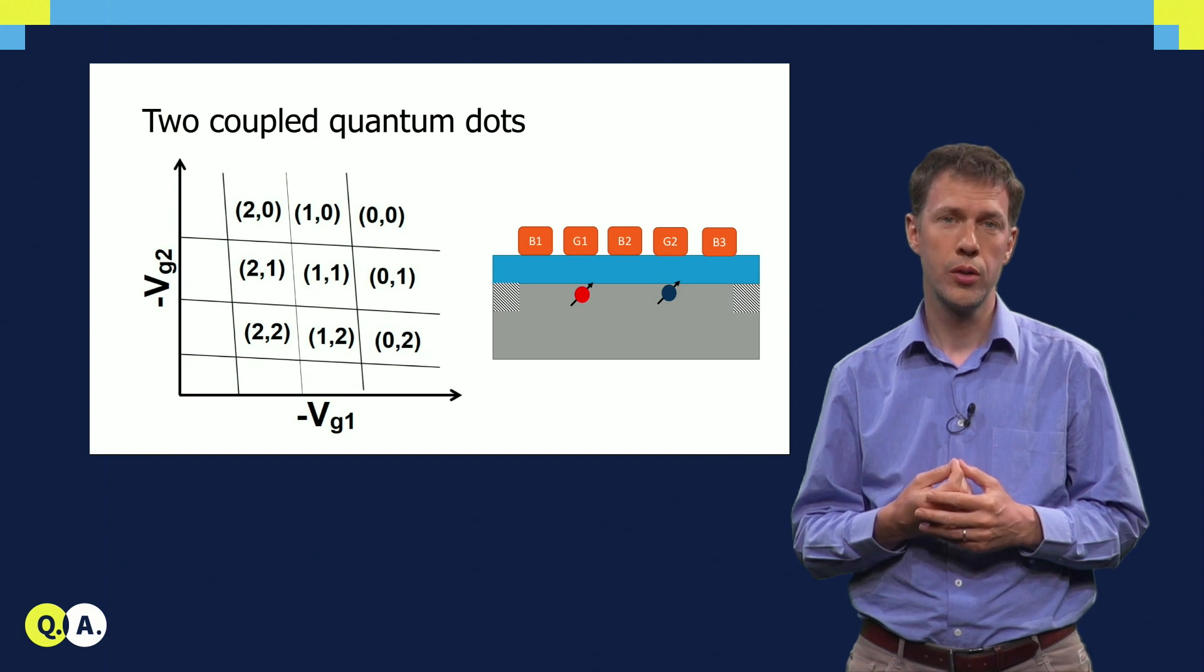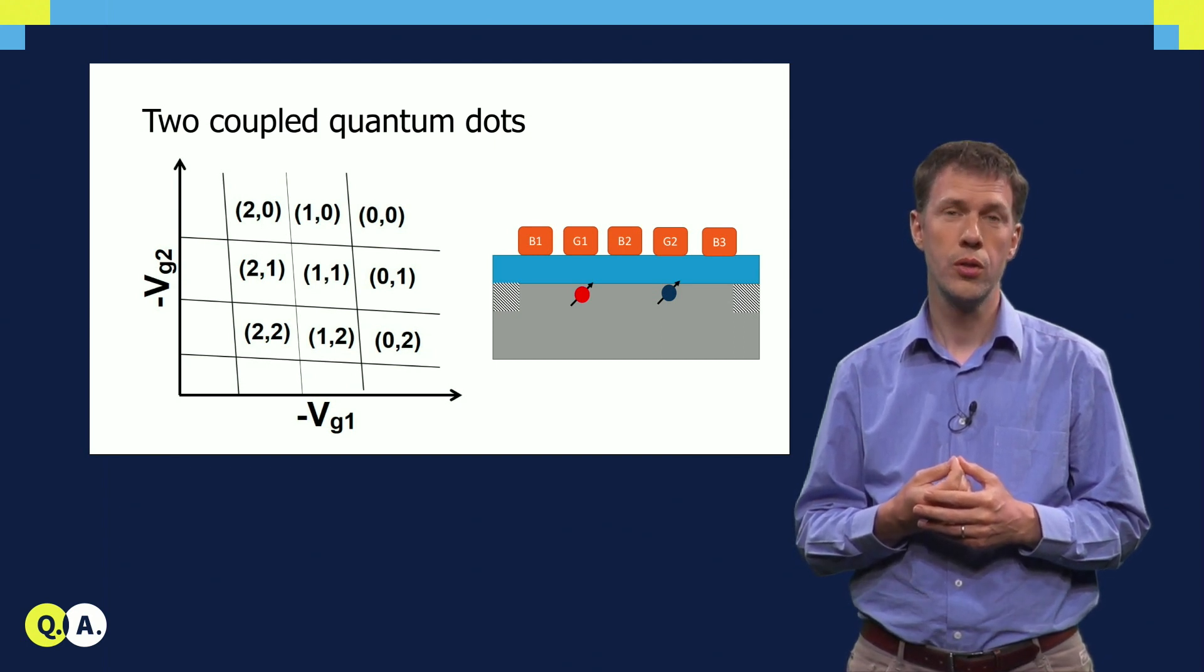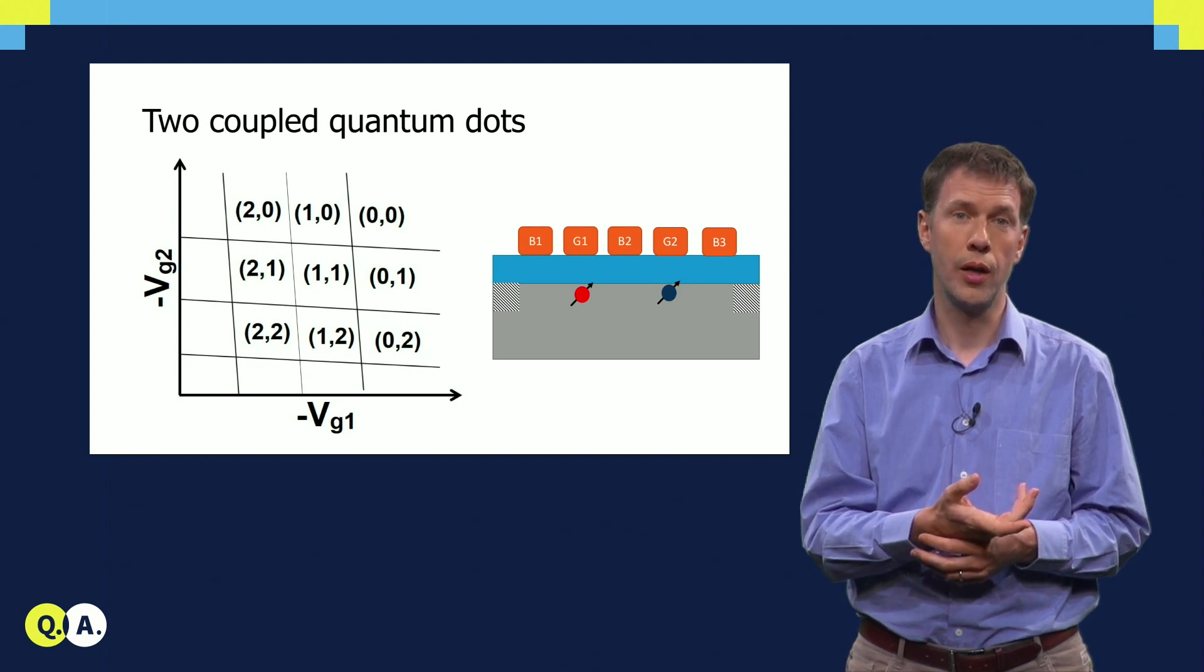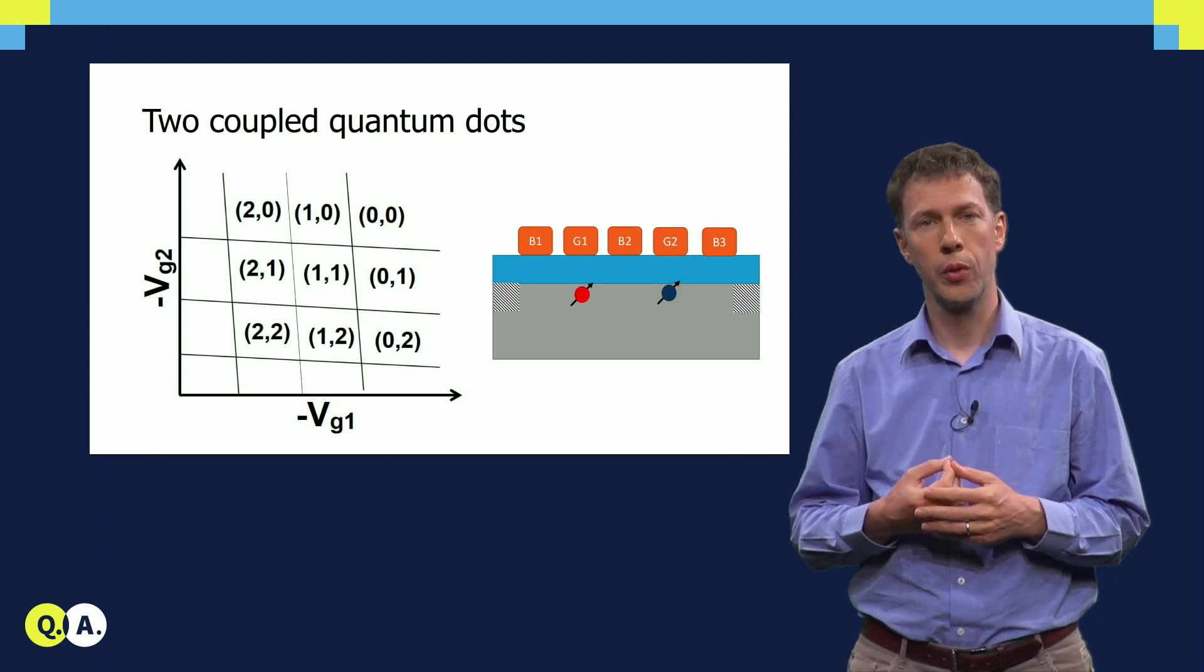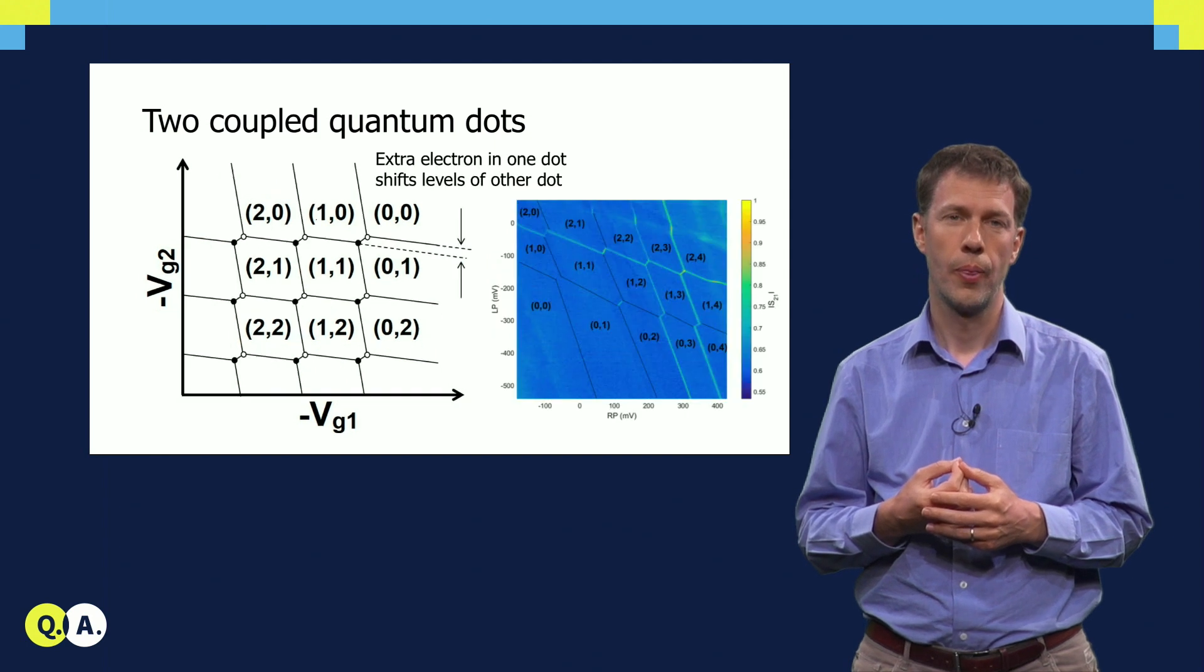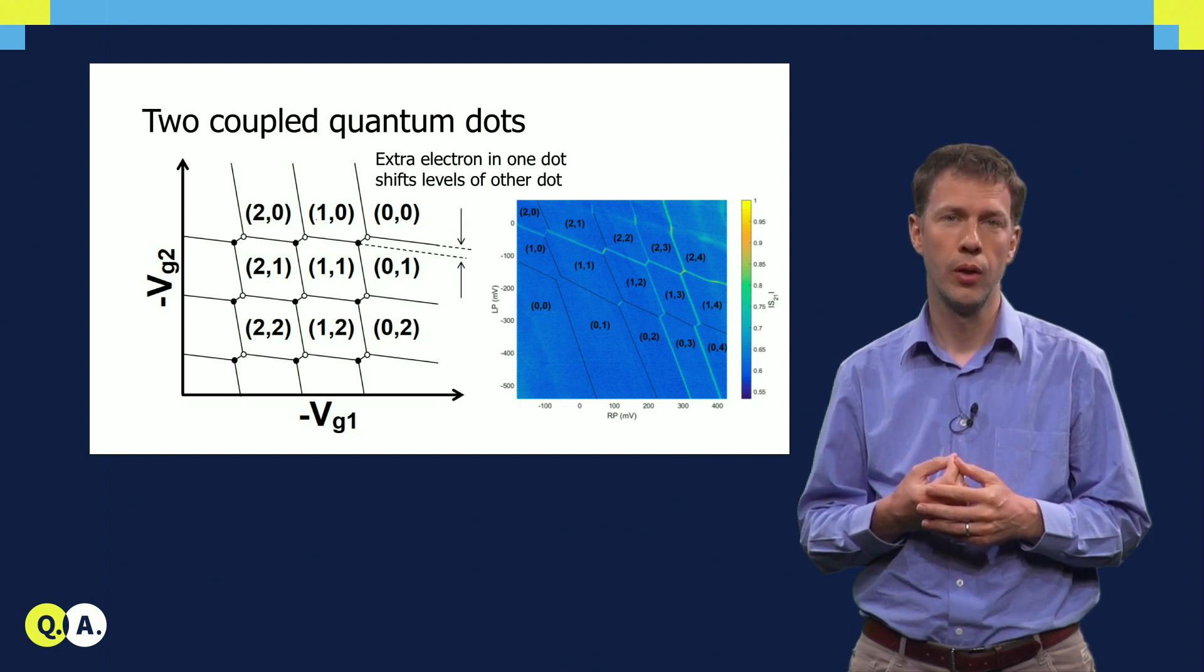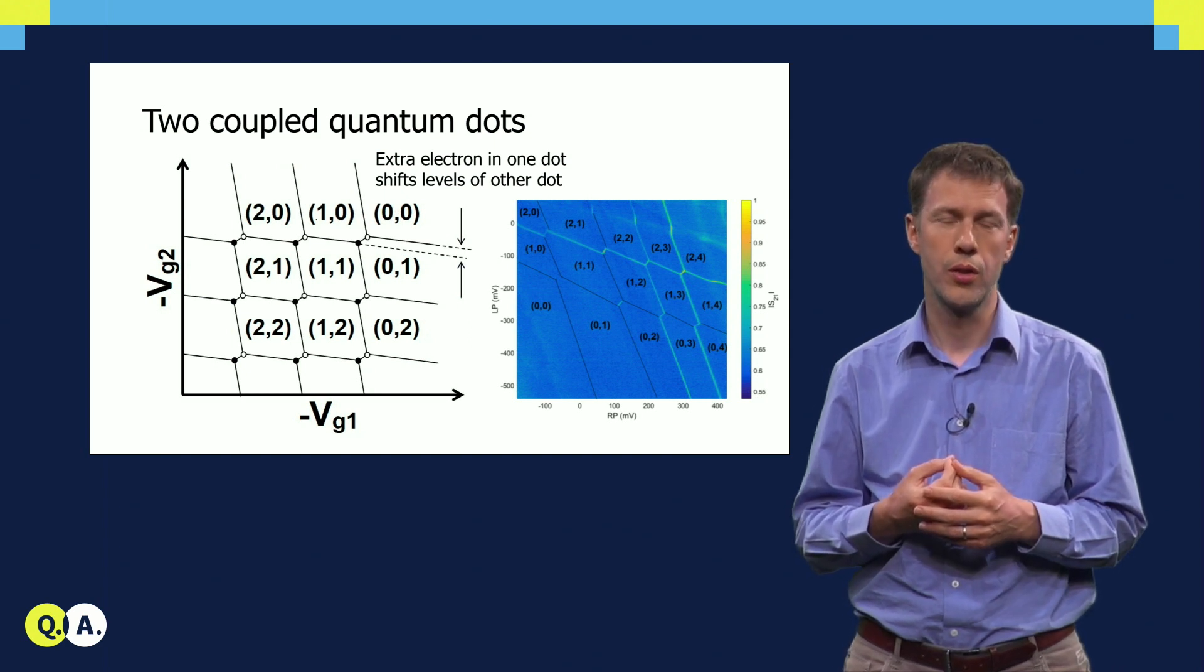If we now consider two quantum dots in each other's vicinity, two effects will happen. The first is crosstalk. The voltage applied to the first gate electrode also affects the potential of the second quantum dot, which sits to its sides, and vice versa. That's why the lines that were vertical and horizontal before are now aligned at an angle. A second effect is that the change in the number of electrons in one quantum dot changes the alignment of the levels in the second quantum dot, which is seen in the diagram as discrete shifts in the position of the charge transitions.